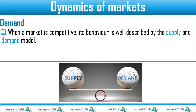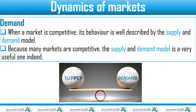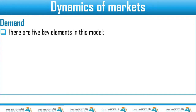The first term we have to define is the main term in this lesson: what is demand? When a market is competitive, its behavior is well described by the supply and demand model, which we are going to go in depth with. Because many markets are competitive, the supply and demand model is a very useful one. We're going to see how it's constructed. Try to remember from earlier grades — was the demand curve downward sloping or upward sloping?